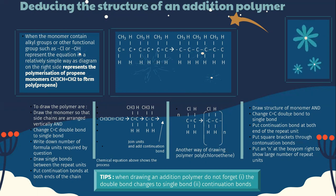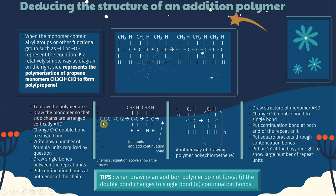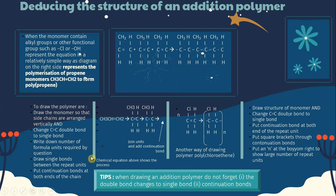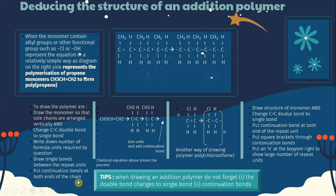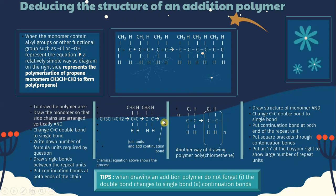To draw the polymer structure: first, draw the monomer so that side chains are arranged vertically. Then change the double bond to a single bond. Write down the number of formula units required by the question and draw single bonds between the repeat units. Put continuation bonds at both ends of the chain, as shown in the diagram.